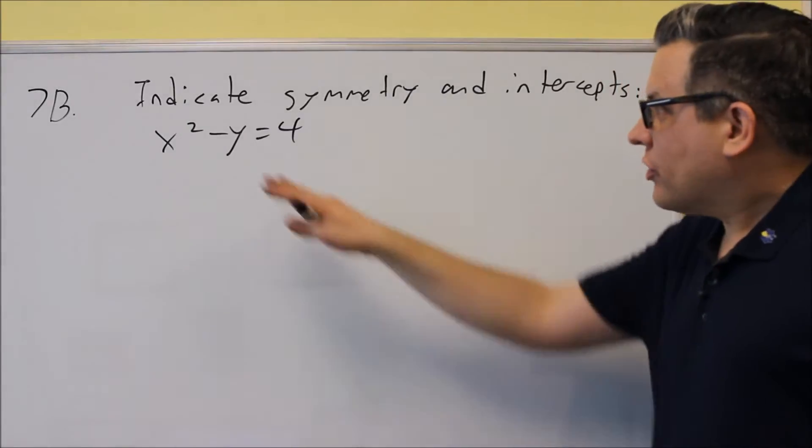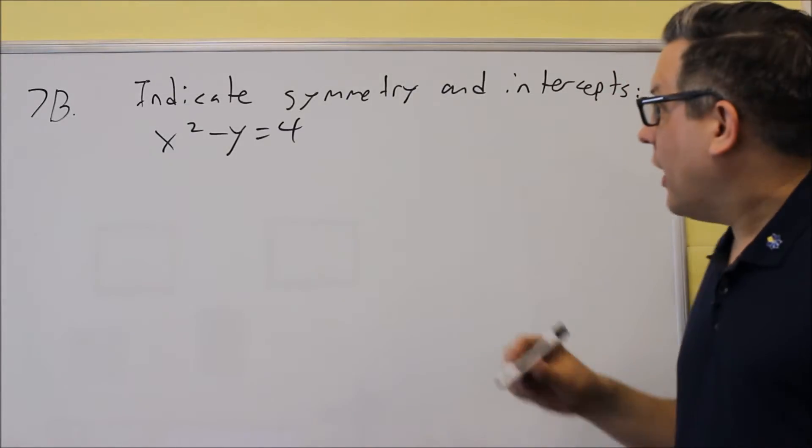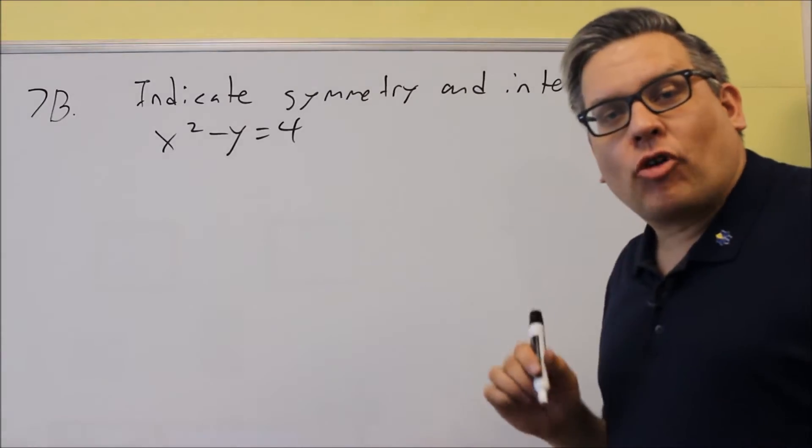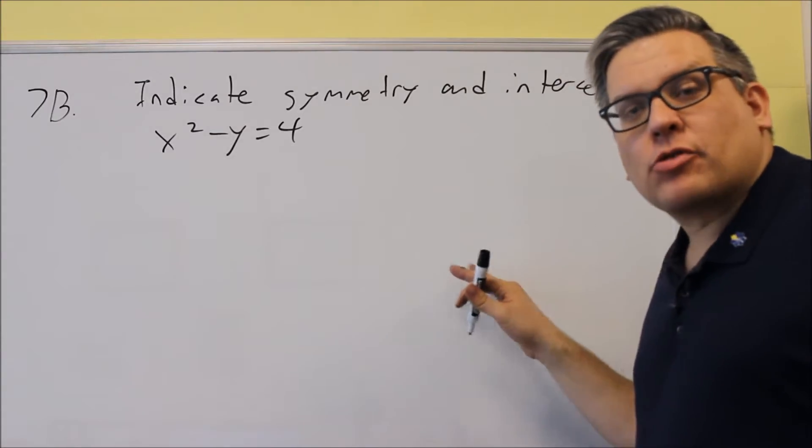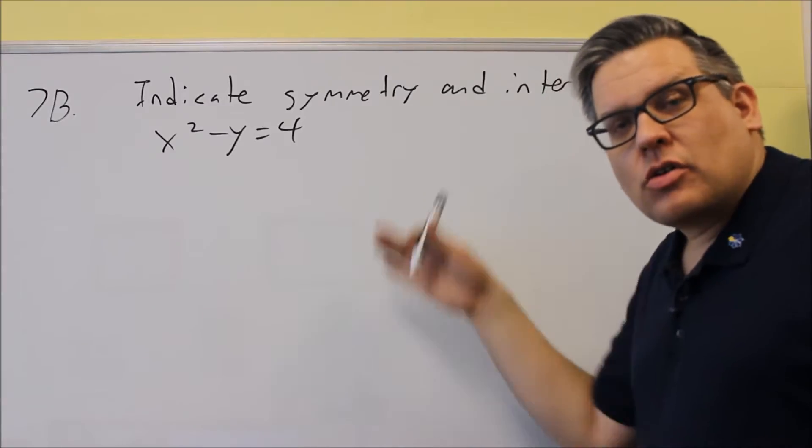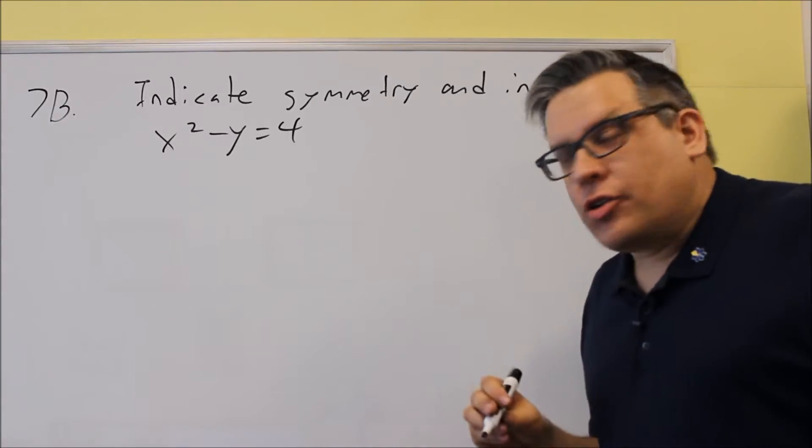Okay, for 7b, we're doing the same thing again: symmetry and intercepts. Like I said before, make sure your work is clearly labeled. When you show the three different tests for symmetry, make sure you clearly label those so I know what you're actually doing in your work.